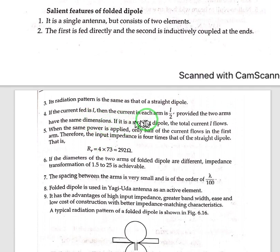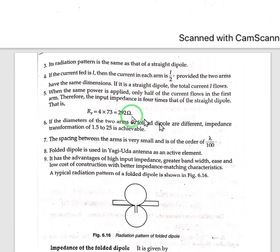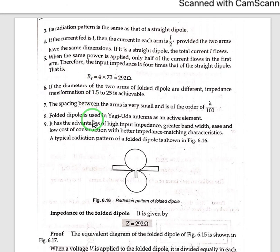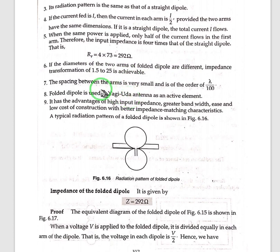If the current fed is I, then the current in each arm is I by 2. When the same power is applied, only half of the current flows in the first arm; therefore the input impedance is four times that of the simple dipole. If the diameter of the arms of the folded dipole are different, impedance transformation of 1.5 to 25 can be achieved. The spacing between the arms is very small and is in the order of lambda by 100.